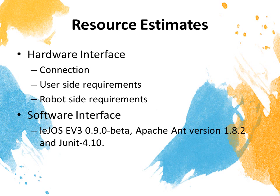The resource estimated part will contain hardware interface, connection, user sign requirements, and robot sign requirements. And the software interface includes leJOS EV3 0.9.0 beta, Apache Ant version 1.8.2, and JUnit 4.10.